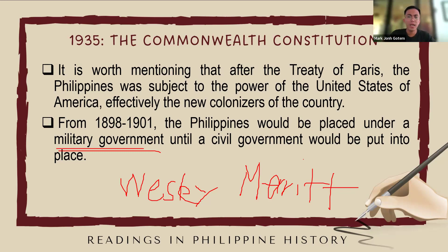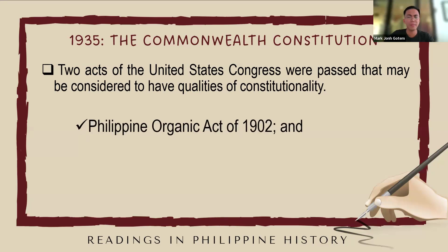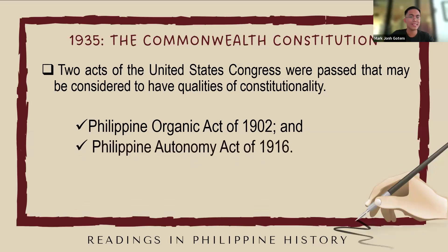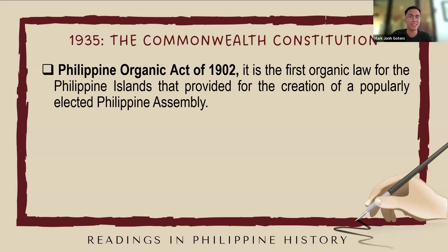During this period, there were significant political and social changes as well as resistance from Filipino revolutionary forces seeking independence. Two acts of the United States Congress were passed that may be considered to have qualities of constitutionality: first, the Philippine Organic Act of 1902, and second, the Philippine Autonomy Act of 1916. Let's start first with the Philippine Organic Act of 1902.